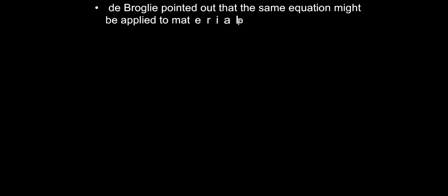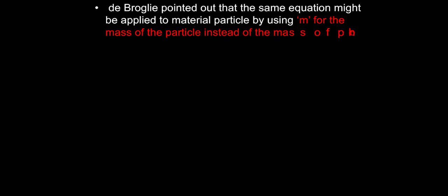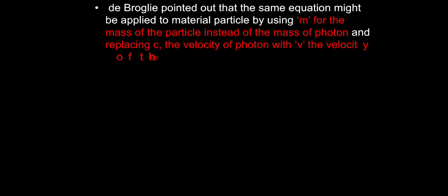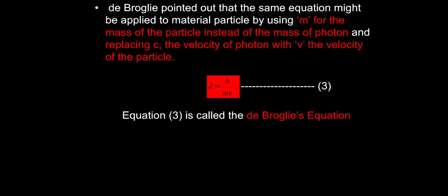De Broglie pointed out that the same equation might be applied to a material particle by using m for the mass of the particle instead of the mass of the photon, and replacing c, the velocity of the photon, with v, the velocity of the particle. This gives lambda equals h by mv — De Broglie's equation, let us call it equation 3.